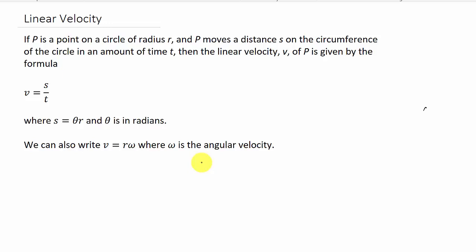So if you know the angular velocity and the radius, just plug it in there and that will give you the linear velocity also. Let's take a look at an example.